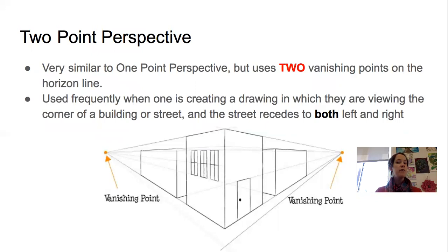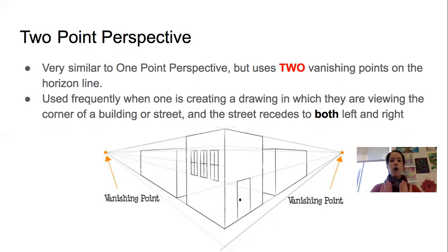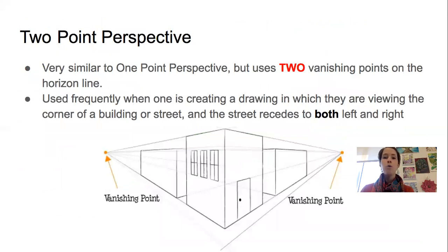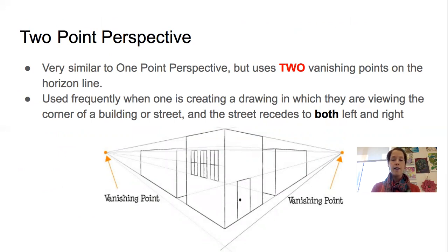In two point perspective, it's very similar to one point, but now you've got two vanishing points usually on either side of the page. Like the example shown here, it's like looking at the corner of a street or a building block — all the sides of buildings disappear off to either vanishing point, so you usually see both sides. One point perspective uses vertical, horizontal, and diagonal lines. Two point perspective will only have diagonal and vertical lines — there will never be a horizontal line in two point perspective unless something is literally level with the horizon line.